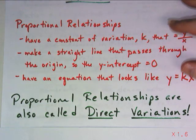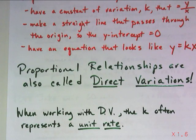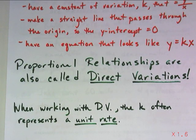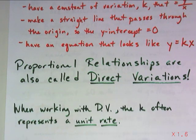And when you look at direct variations, often the k, that constant of variation, represents a unit rate. Think back to our classwork that we did. We talked about how much it cost per bouquet of tulips. That's just an example of a unit rate. It was $5 per one tulip bouquet.